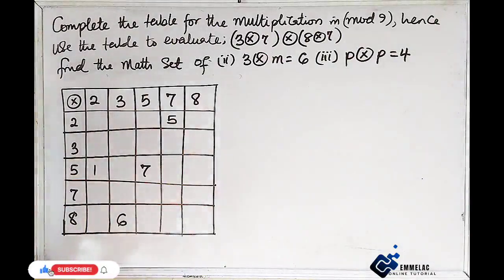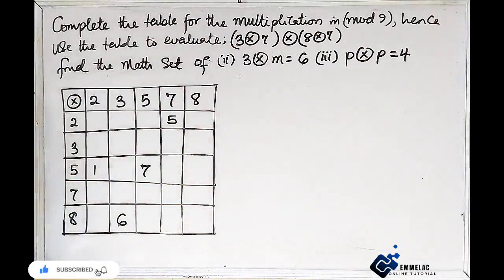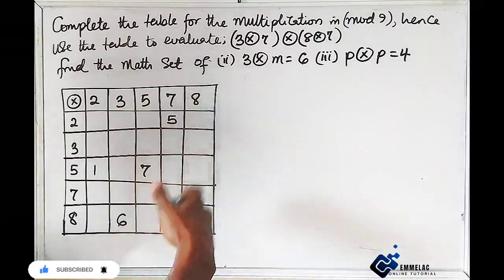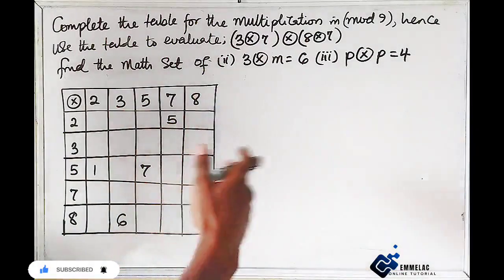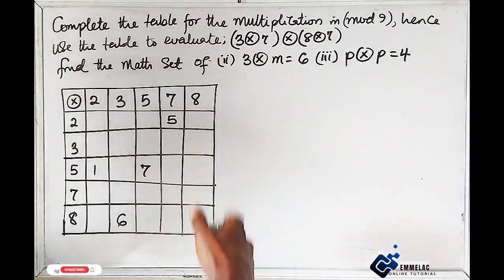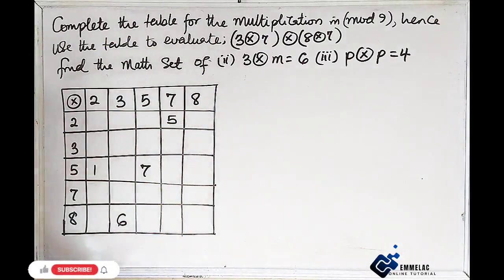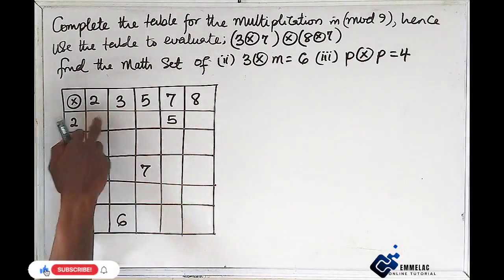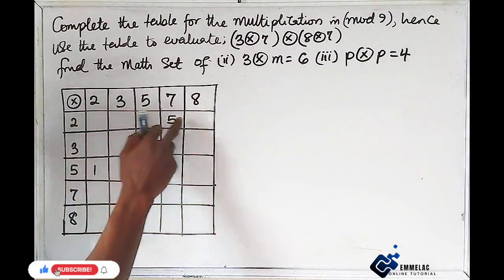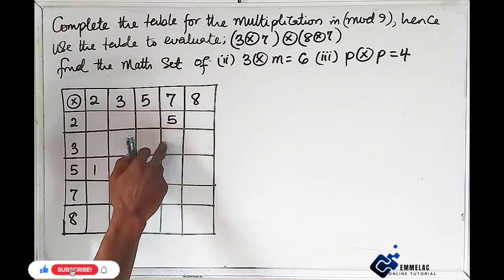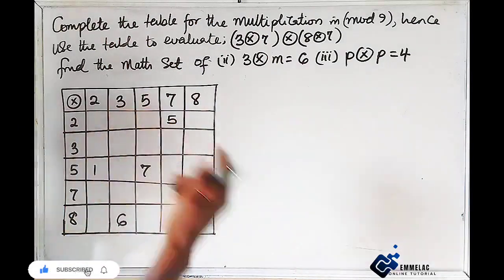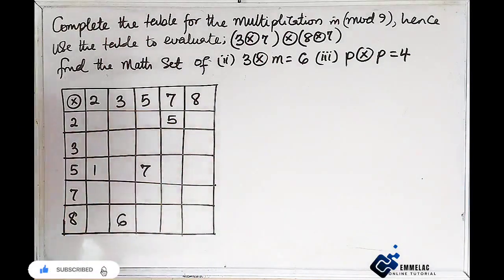First, we need to understand what mod 9 is. Mod 9 means numbers that operate in a circle of 9. For each value we write in this table, it will be the remainder after removing full circles of 9.